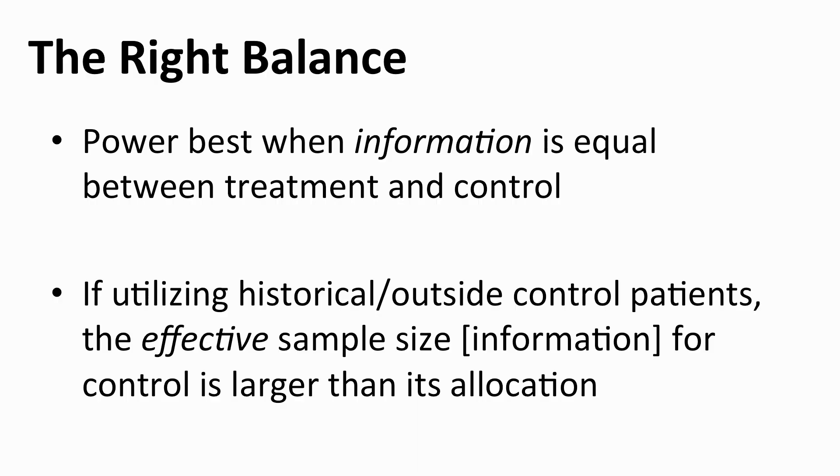Information is a little bit different than subjects. In many situations it is the same as the same number of subjects. But if we're utilizing controls from a different experiment — either one going on concurrently or historical controls we're borrowing from — our effective sample size on the control arm might be much bigger than what we're actually allocating in this particular trial. If you want more information on borrowing from historical controls, see Kurt Vele's talk on the Berry Consultants website.